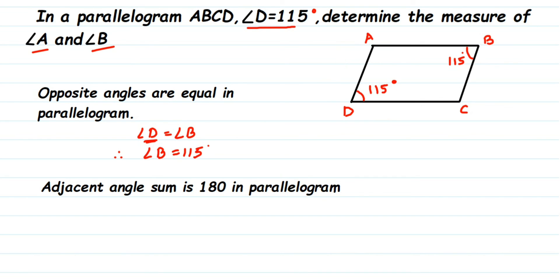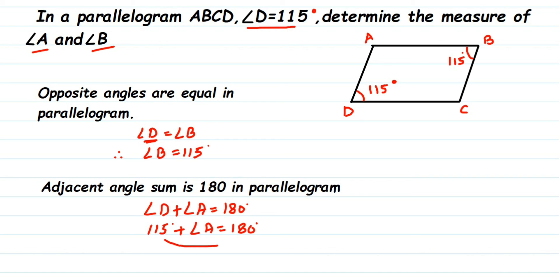Using this property: angle D plus angle A equals 180 degrees. Since angle D is 115 degrees, we get 115 plus angle A equals 180. Transposing, angle A equals 180 minus 115, which gives us angle A equals 65 degrees.